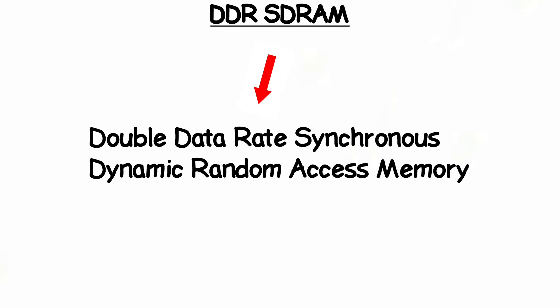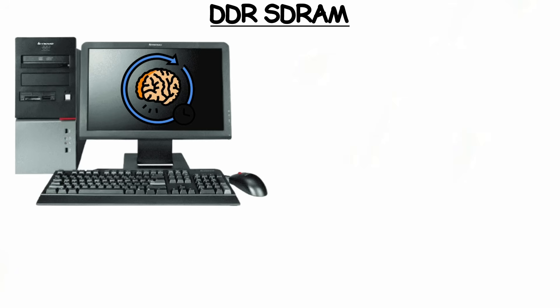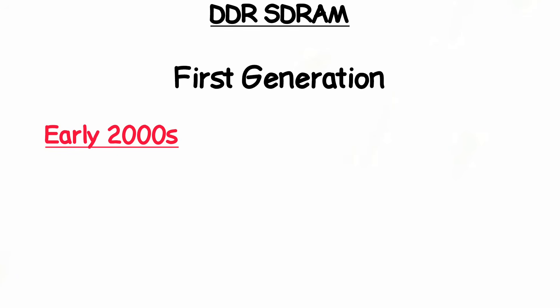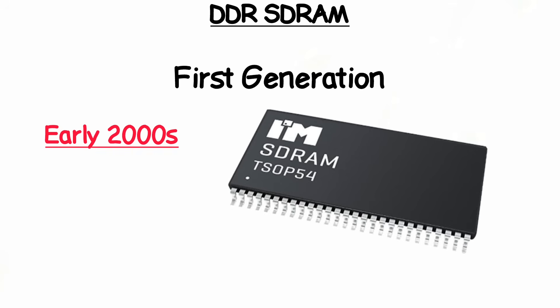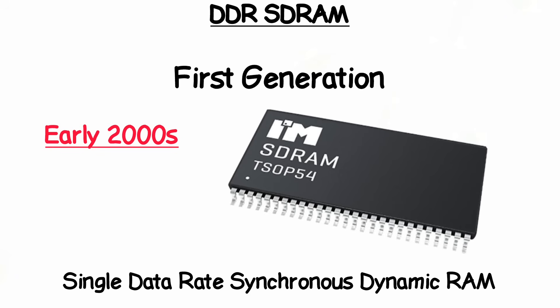DDR-SDRAM stands for Double Data Rate Synchronous Dynamic Random Access Memory, and it is a type of computer memory that transfers data twice per clock cycle. The first generation was introduced in the early 2000s as a faster improvement over SDR-SDRAM, or Single Data Rate Synchronous Dynamic Random Access Memory.